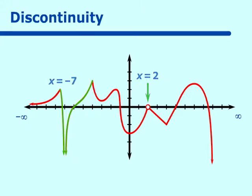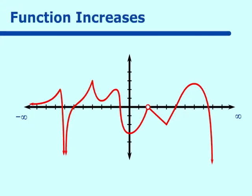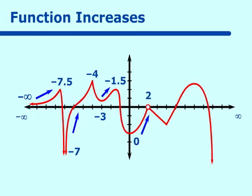Now let's look at where our function increases. It increases from negative infinity to negative 7.5, then from negative 7 to negative 4, then from negative 3 to negative 1.5, then 0 to 2, and 4 to 7. These intervals are written in parentheses, because at a maximum or minimum the function is non-increasing and non-decreasing.